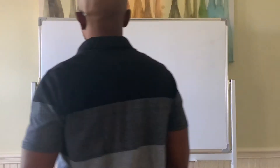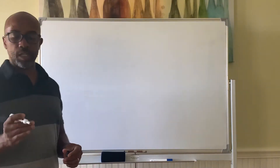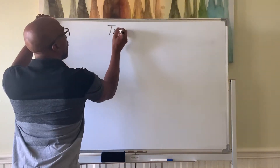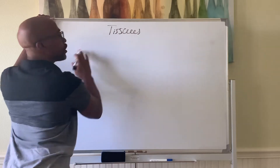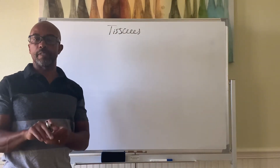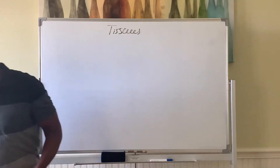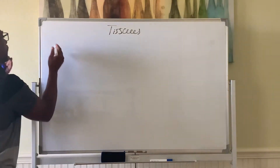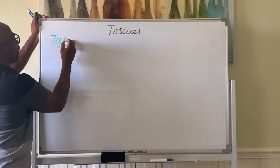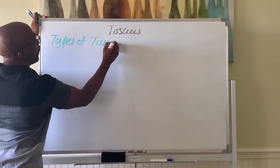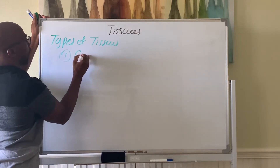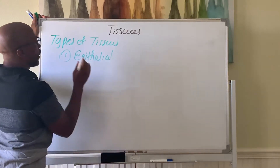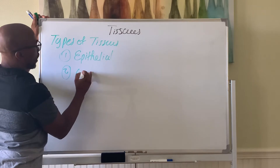Let's look at tissues — we will not be doing cells this semester, so we'll go to tissues instead. Tissues are collections of cells that work together toward a common function. There are four types of tissues in our bodies: epithelial tissue, connective tissue, muscle tissue, and nervous tissue.